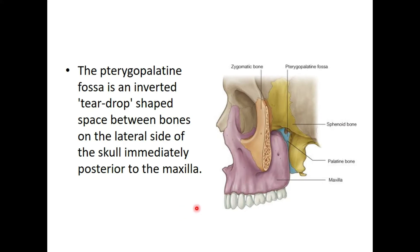The third fossa is a small hidden fossa, but it is very important because it contains a very important structure. This fossa is called the pterygopalatine fossa — an inverted teardrop-shaped space present between the bones on the lateral side of the skull, immediately posterior to the maxilla. The bones involved are the sphenoid bone, the palatine bone (shown here in blue), and the maxilla.